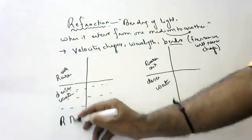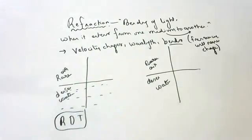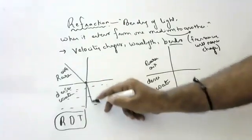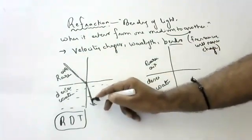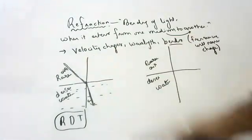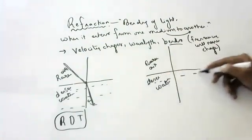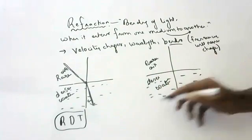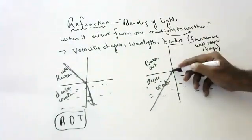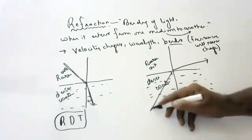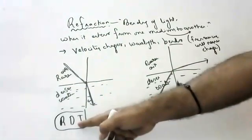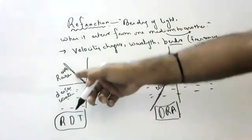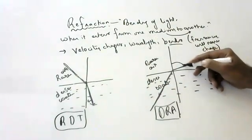Whenever light enters from rarer to denser, it moves towards the normal. Rarer to denser — light always moves towards the normal. Denser to rarer — light always moves away from the normal.